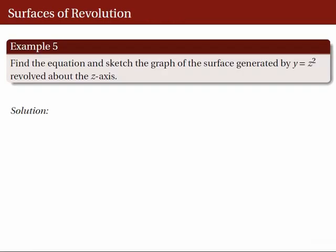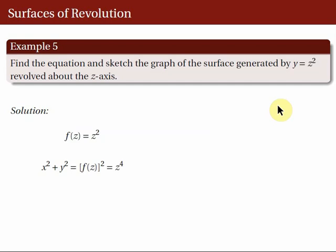Example: find the equation and sketch the graph of the surface generated by y = z² revolved about the Z-axis. The axis of revolution is the Z-axis, so we want the generating curve in the form f(z) = x or f(z) = y. Here we already have f(z) = y, so f(z) = z². It immediately follows that the equation of the SOR is f(z)² = x² + y², giving us z⁴ = x² + y², or rewritten: x² + y² − z⁴ = 0.